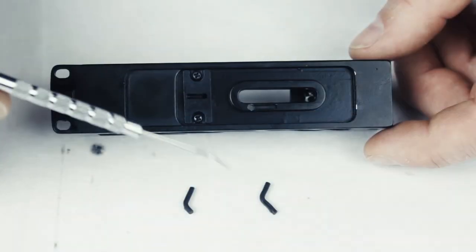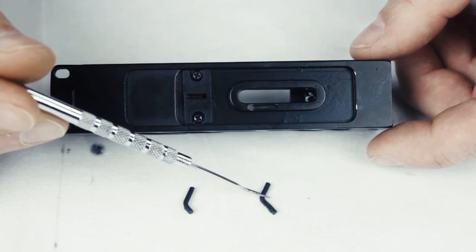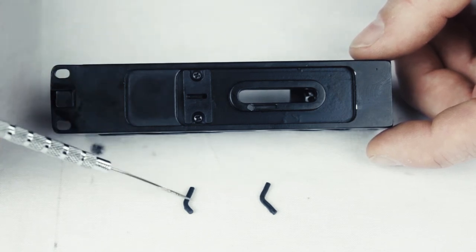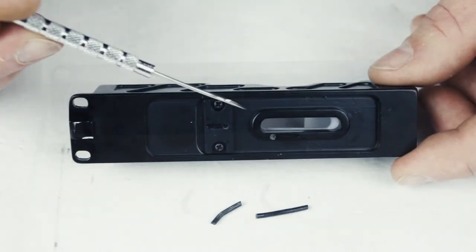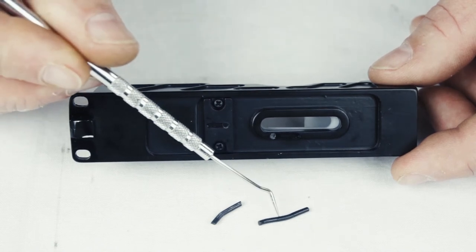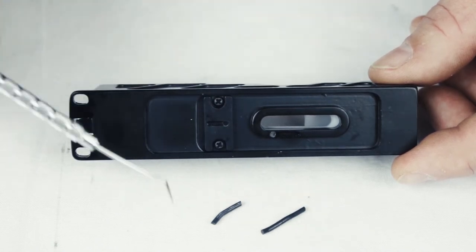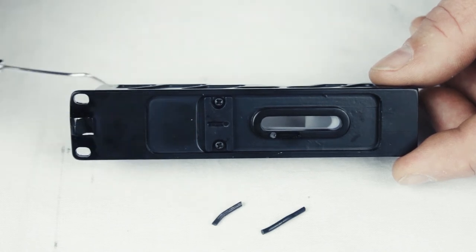On the 68 caliber version, the anti-double feed ball detent is five-eighths of an inch long or 16 centimeters, and the anti-barrel roll ball detent is a half inch long or 12 centimeters. On the 50 caliber paintball version, the anti-double feed ball detent is three-quarters of an inch long or 19 centimeters, and the anti-barrel roll is five-eighths of an inch long or 16 centimeters.